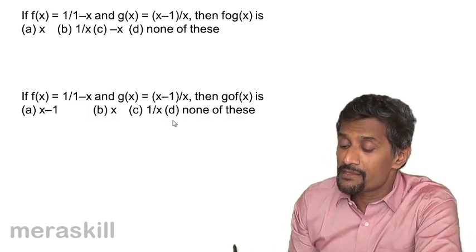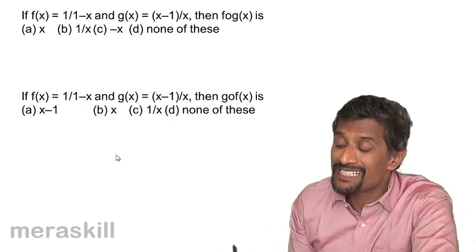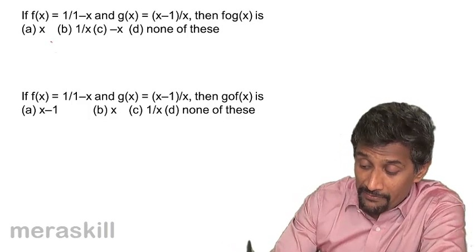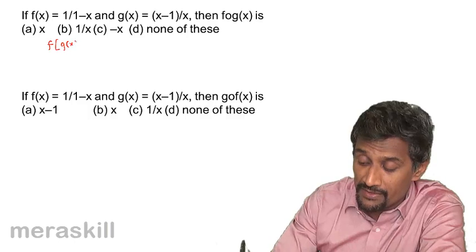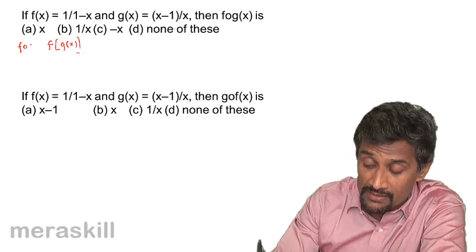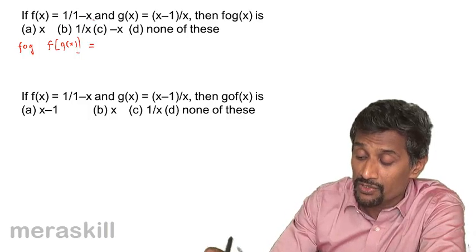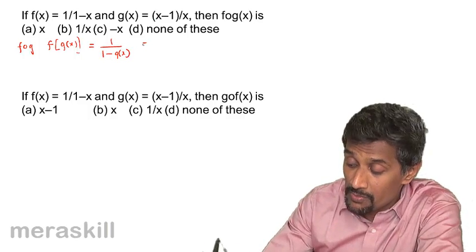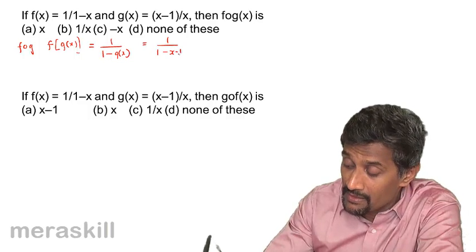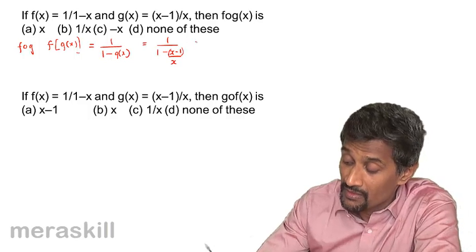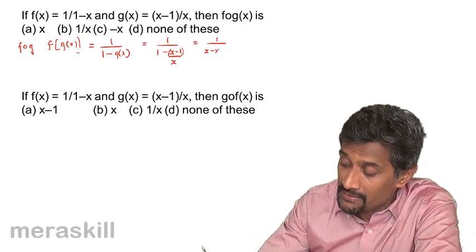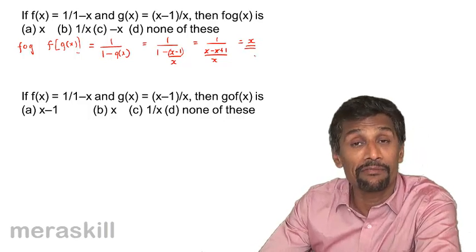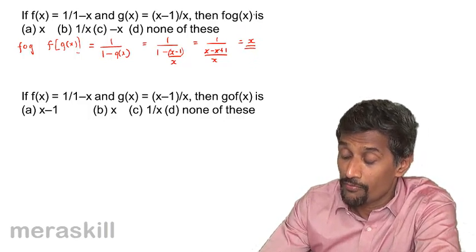Now we take composite functions. Given f(x) = 1/(1−x) and g(x) = (x−1)/x, find f of g of x (fog). f(g(x)) means replacing x in f with g(x): it becomes 1 divided by (1 − (x−1)/x). This simplifies to 1 divided by ((x − x + 1)/x), giving x over 1, so f(g(x)) = x.